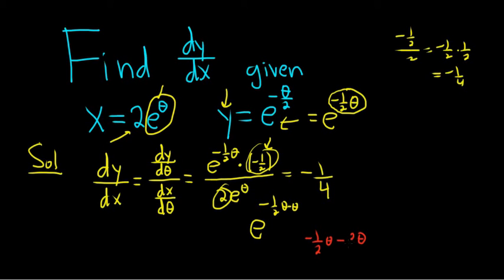You think of it as 2/2 theta. So this is negative 3θ/2. Negative 1 minus 2 is negative 3. So this will be e^(-3θ/2).